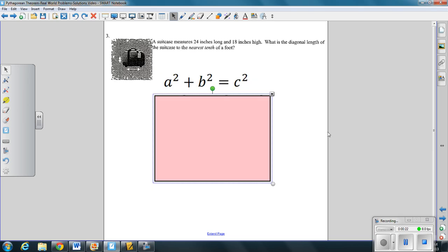Number one, we had a suitcase that measures 24 inches long by 18 inches high. So 24 inches long, which would be here left to right, and 18 inches high right here. So we want to know the diagonal of the length of the suitcase to the nearest tenth. Please underline this if you haven't done so already.